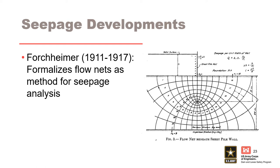Now let's look at some developments in seepage analysis that occurred shortly thereafter. One of the first was the development of flow nets. Professor Philip Forheimer developed the concept of flow nets in 1911 and formalized them as a graphical method for seepage analysis. While flow nets were developed in 1911, they did not catch on quickly — especially in the US — because the findings were published in German. It should be noted that Forheimer, Terzaghi, and Casagrande were all of German origin. Terzaghi became aware of flow nets almost immediately and began using them in practice, and we know for sure that by 1917 Terzaghi was using flow nets, per Casagrande's 1937 paper.